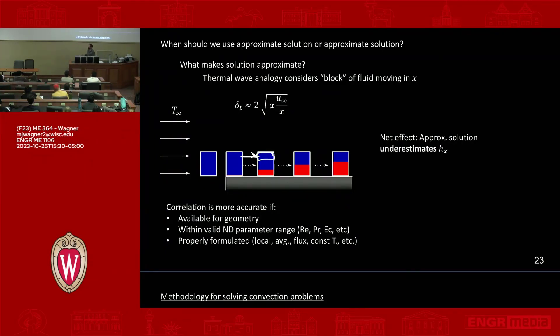In the end, we find that the net effect of our approximate solution is that it underestimates the true heat transfer coefficient. So if you go back and use these approximate models, use it as a bounding case, realize that you're underestimating your heat transfer coefficient. It's because we're making this approximation that the fluid is basically a self-contained thing that just moves along.